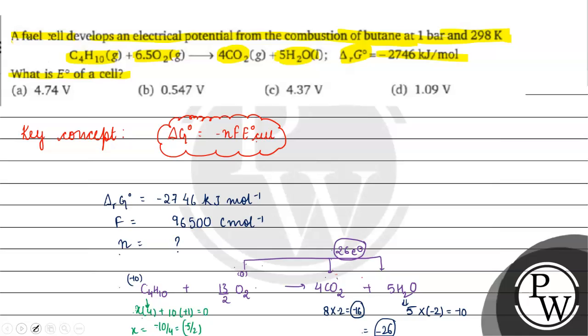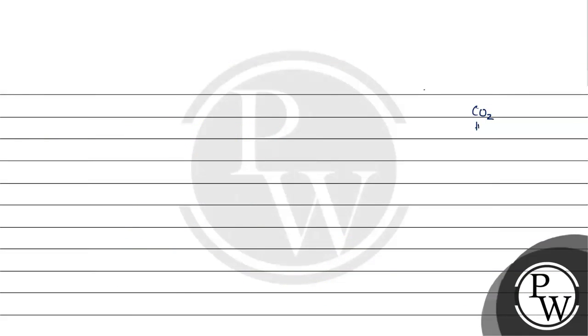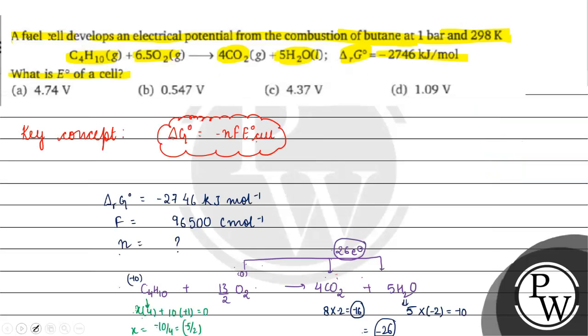In CO₂, carbon's oxidation state is x plus 2 times minus 2 equals zero, so x equals plus 4 for one carbon atom. For four carbon atoms, the oxidation state is plus 16. From minus 10 to plus 16, we see 26 electrons are involved. So n equals 26.